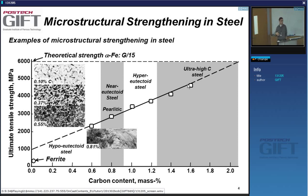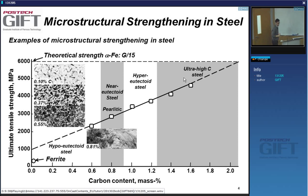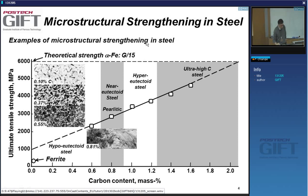That's interesting — we're getting close to what people agree is about the theoretical strength of steels, which is G divided by 13 or G divided by 15, depending on how you approach it. It's an extremely strong material.